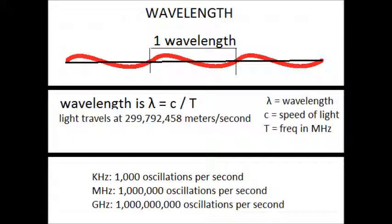For instance, for the 870 kilohertz AM band, I would take the speed of light and divide that by 870,000. Because kilohertz is oscillations per second. That would give me 344 meters. That is a large band.